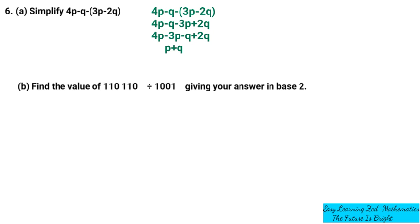To divide any number in a base other than base 10, you first need to convert the numbers given into base 10. Then you divide, and then you convert the quotient you get back into that base. In this case, we convert the base 2 numbers into base 10, divide, then convert the quotient back into base 2.